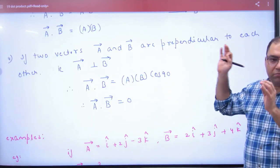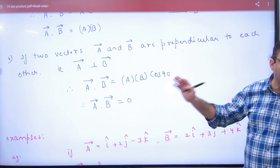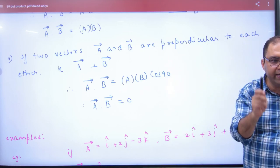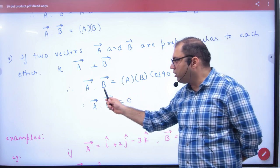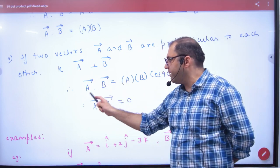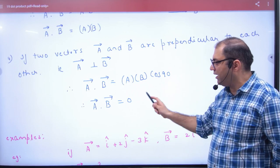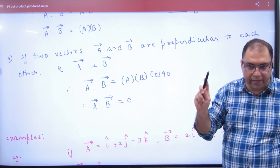This property is very important. We will have a clear question. If two vectors are perpendicular at 90 degrees, then their dot product will always be zero. Because A vector dot B vector equals A, B, cos 90, answer is zero. Remember this property.